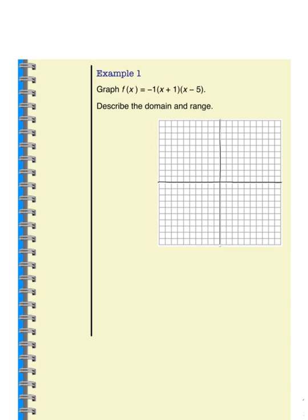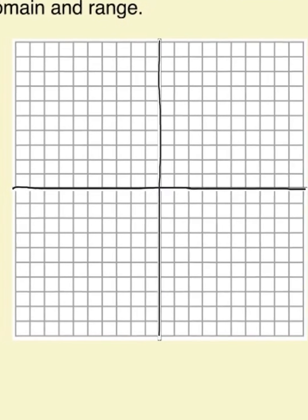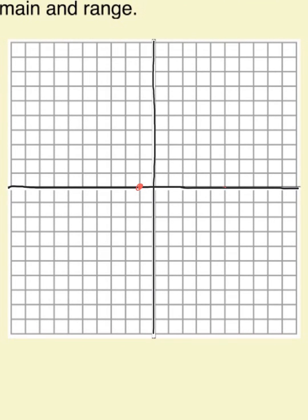Example 1: graph the function -1(x + 1)(x - 5). The first thing I notice is that a is -1, which means this graph is going to open down. Intercept form is easier to graph because it gives us the x-intercepts. The original form was x minus p and x minus q, so with (x + 1), the intercept is actually -1, 0. And the (x - 5) gives us a positive 5, 0. I'm going to plot those on the graph — one intercept at -1 and one at positive 5.